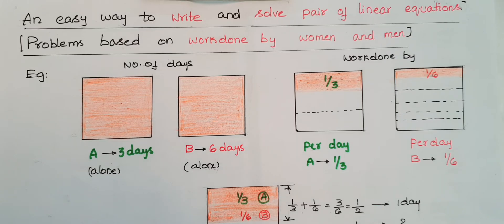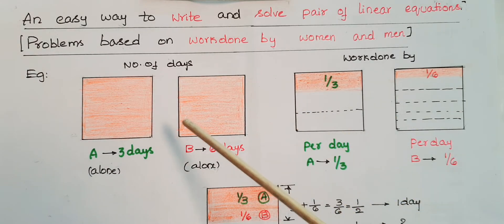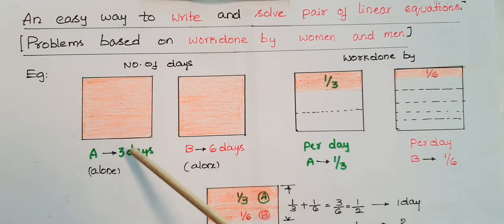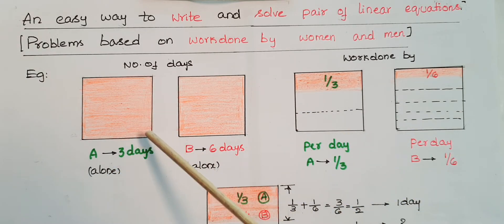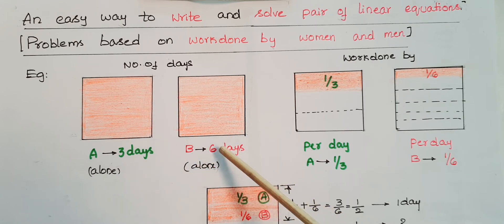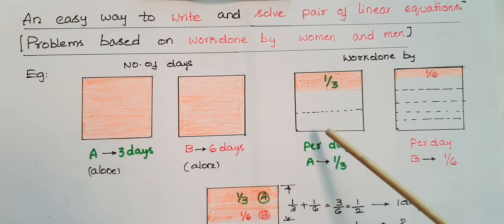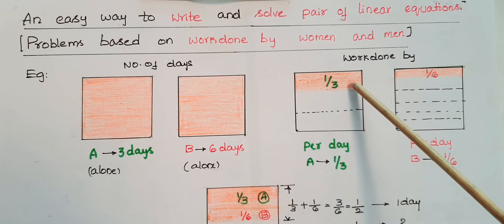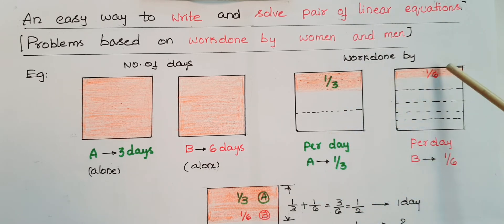Hello everyone. Today I am going to explain an easy way to write and solve pairs of linear equations for problems based on work done by women and men. For example, A alone can paint a wall in three days and B alone can paint the same wall in six days. Per day, A can paint one-third of the wall and per day B can paint one-sixth of the wall.